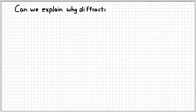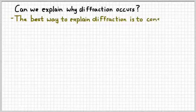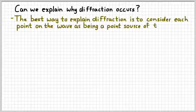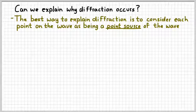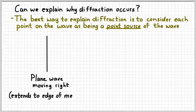Can we explain why diffraction occurs? The best way to think about this is to consider all the points along a wave as being point sources that create new waves. A point source is something that creates waves from a single point — kind of like dipping a pencil into a bowl of water, giving you spherical waves — as opposed to a plane source, like dipping a ruler into water. Here is our plane wave moving to the right, extending to the edge of the medium, so the edges don't do anything special.